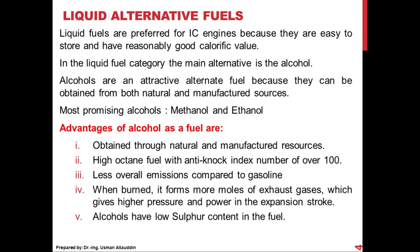Advantages of alcohol: First, it can be obtained through natural and manufactured resources. Second, alcohol has a high octane number — greater than 100 — whereas petrol has an octane number of around 90+. With an octane number greater than 100, we can operate an alcohol-based engine at much higher compression ratios than gasoline-based engines. Higher compression ratio means higher efficiency and higher power output.